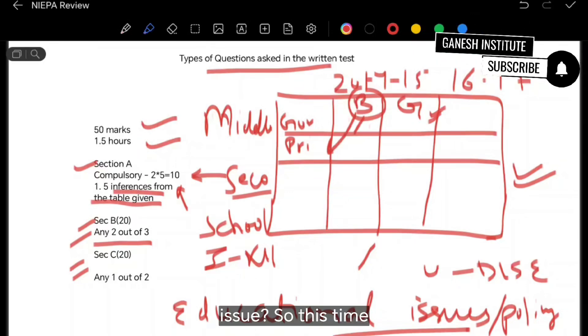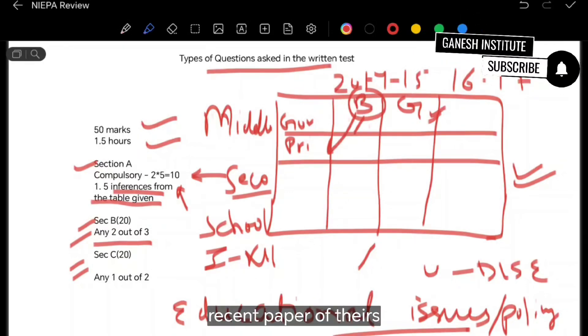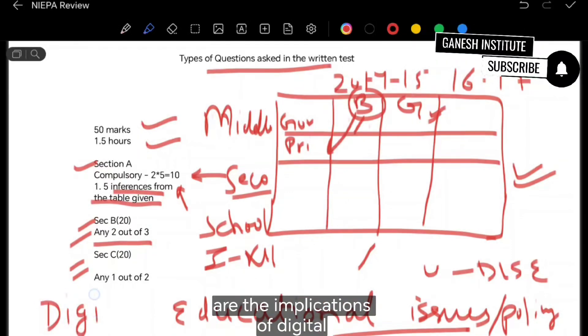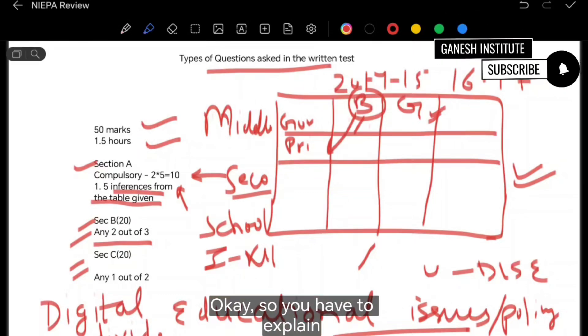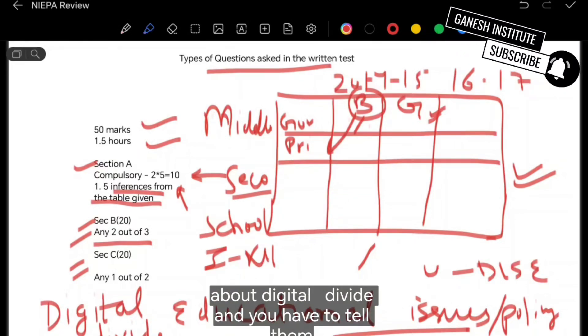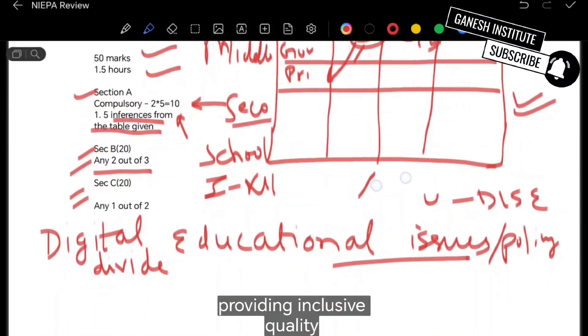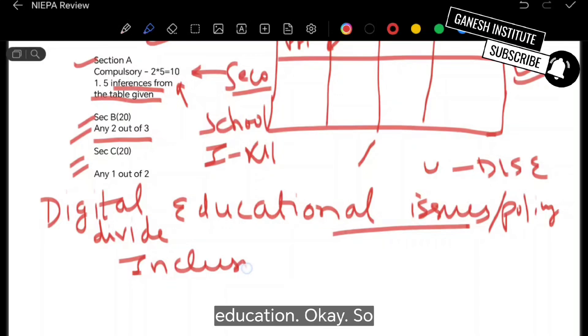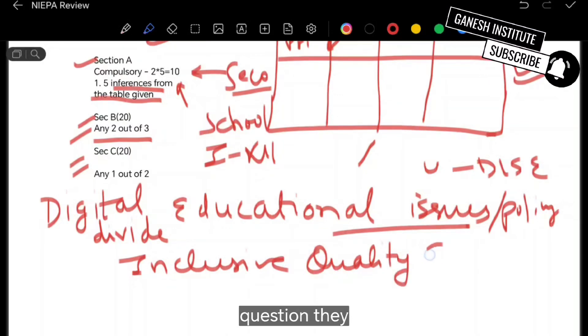So this time, the question was asked in the very recent paper of theirs, that what are the implications of digital divide? So you have to explain about digital divide, and you have to tell them that what are the implications in providing inclusive quality education. So this is one sort of question they ask.